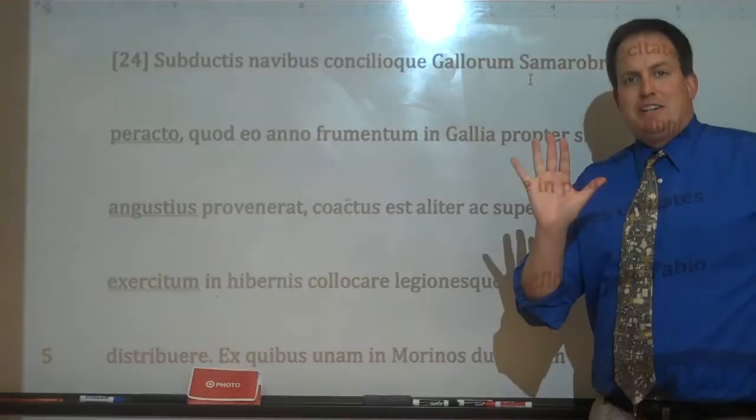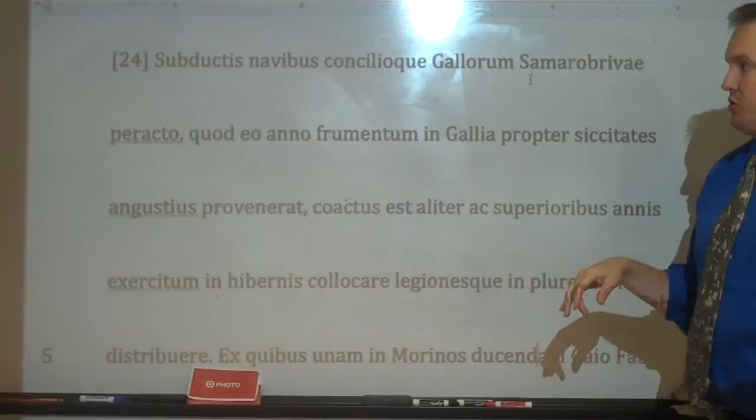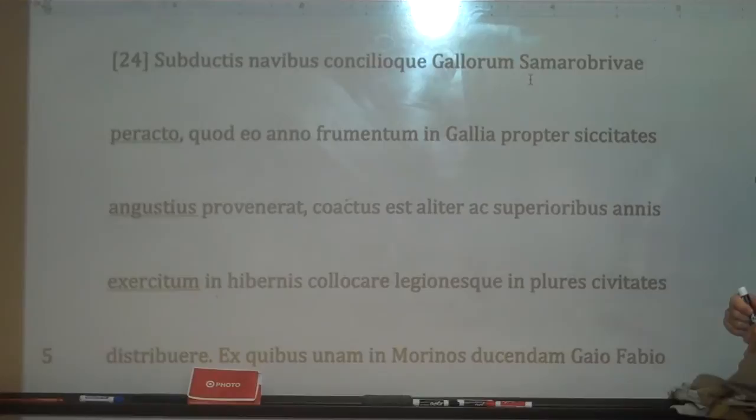Salvete omnes. Today we're looking at Book 5, Section 24 of Caesar's Gallic Wars. So we're starting off — this is after the second invasion of Britain, and then they came back, and they are now going into winter quarters.